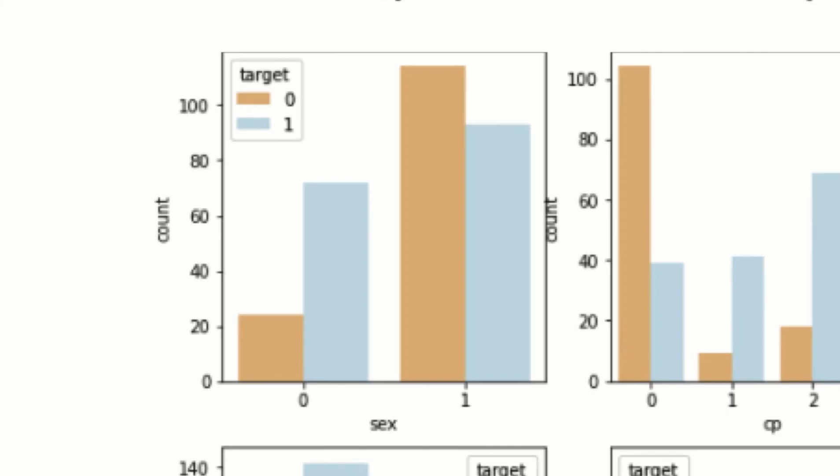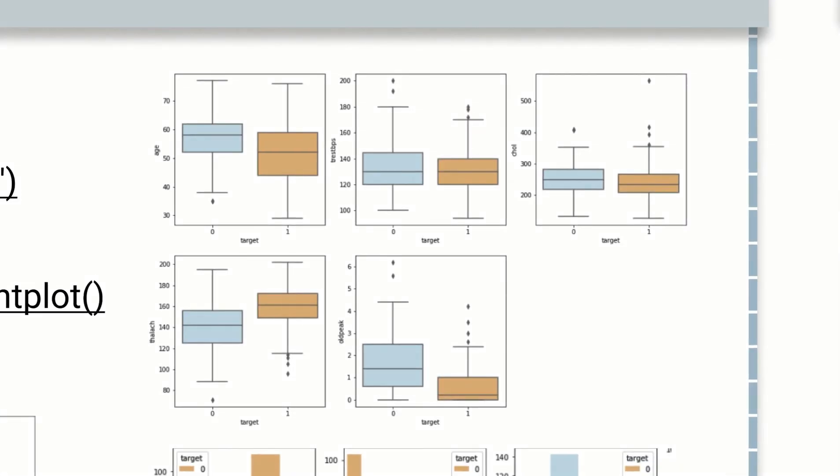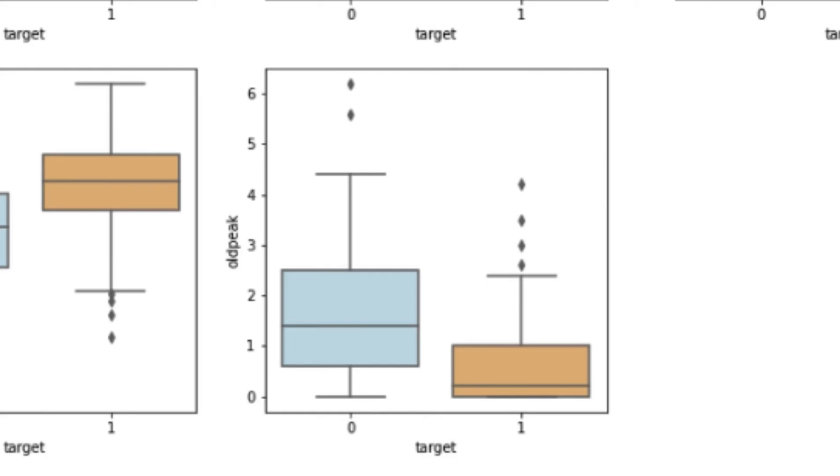On the other hand, if the target distribution is the same regardless of the categorical features, then very likely they are not correlated. Box plot shows how the values of numerical features vary across target groups. For example, we can tell that old peak has distinct difference when target is zero versus target is one, suggesting that it is an important predictor.